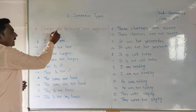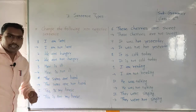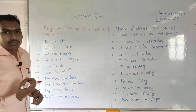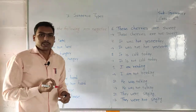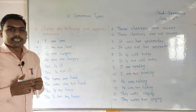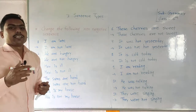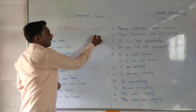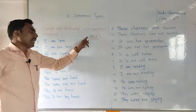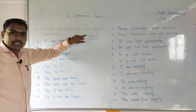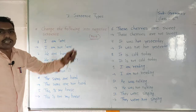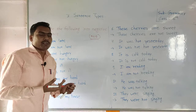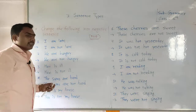First, change the following into negative sentences. In the previous class we also learned how to convert any assertive sentence into a negative sentence by using 'not'. This is a positive sentence and an assertive sentence; we change it into a negative sentence.